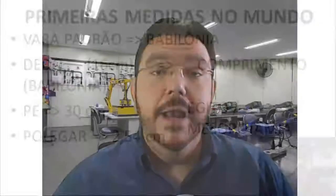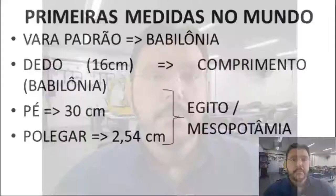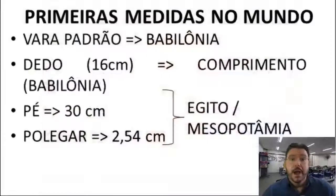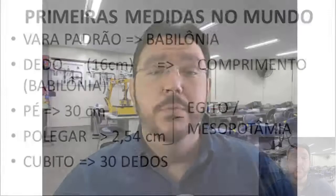A polegada inclusive é tema da nossa aula de hoje. Além disso, temos o cúbito, que é equivalente a 30 dedos. Então 16 centímetros multiplicado por 30 equivale a 1 cúbito. Eram necessárias medidas para coisas maiores e menores, para abranger toda a necessidade da população, e isso foi aumentando cada vez mais.